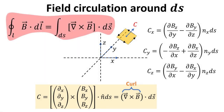Therefore, the local circulation of a field is given by the curl of the field dot-producted with the elemental surface area ds. In other words, we have just derived the Stokes theorem applied to an arbitrarily oriented elemental surface ds. The key result, summarized in the highlighted box, states that the circulation of b around the perimeter of an elemental area is equal to the curl of b integrated over the same elemental area.